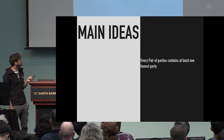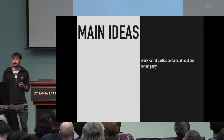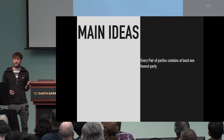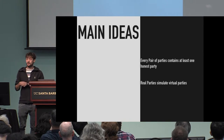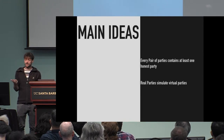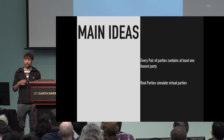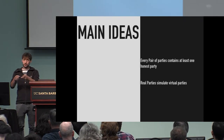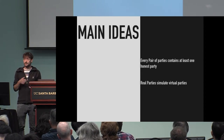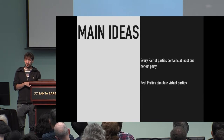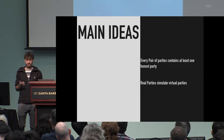There is a simple well-known observation: if we take any pair of two parties and one of them is malicious, then the other one is honest. Instead of letting the real parties directly execute the semi-honestly secure protocol, we introduce one layer of indirection. The real parties simulate some virtual parties, and these virtual parties execute the semi-honestly secure protocol. In the way the real parties simulate the virtual parties, we prevent an active adversary from misbehaving.